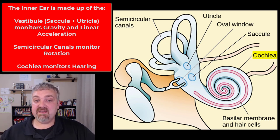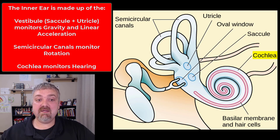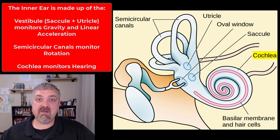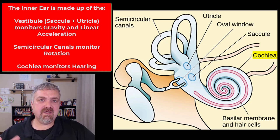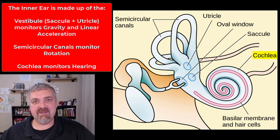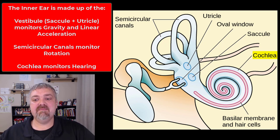Then lastly, we have the cochlea. Inside the cochlea, you have the cochlear duct, and this is going to be where hearing occurs. We'll cover the function of all those in the next videos. So that's the anatomy of the external ear, middle ear, and inner ear. I hope this helps. Have a wonderful day. Be blessed.